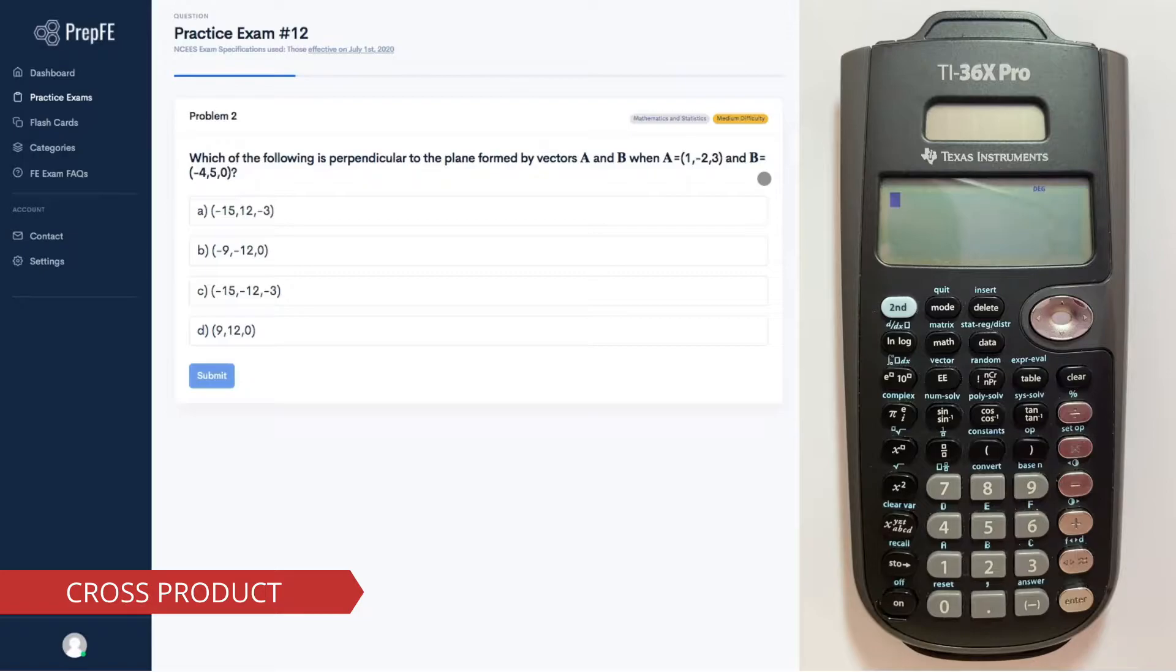In this problem, we need to find a plane that is perpendicular to the plane formed by the two vectors. You can find that perpendicular plane by taking the cross product between vectors A and B.